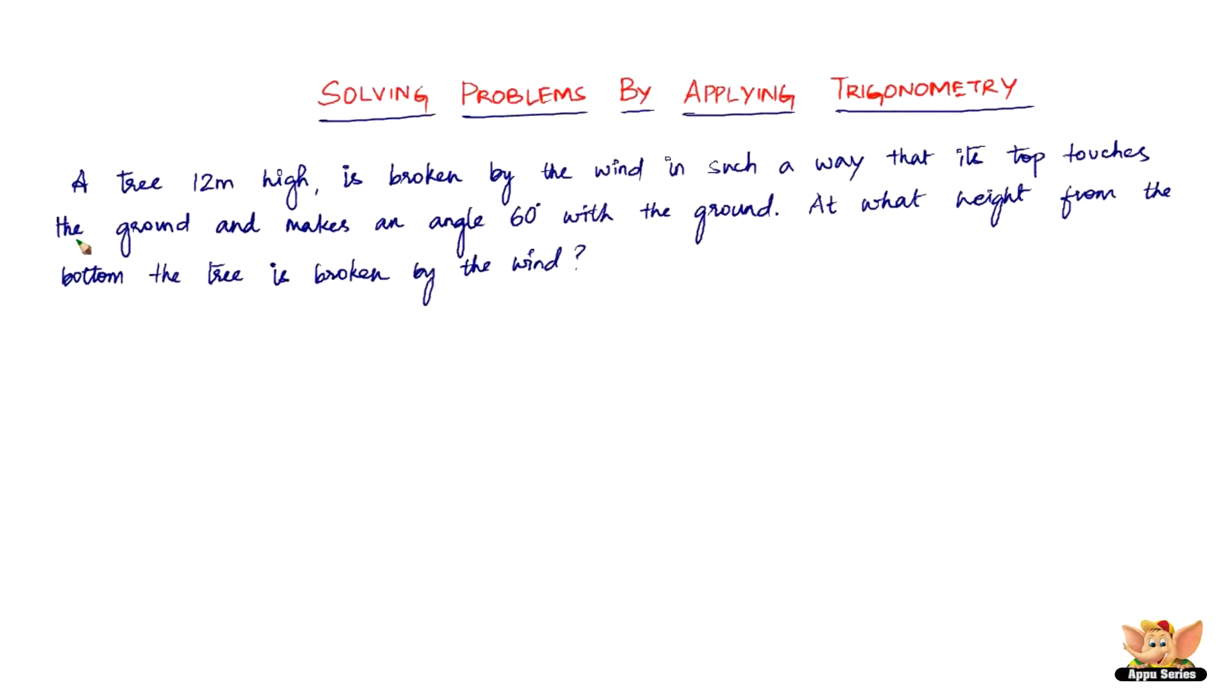In this video, let us solve problems by applying trigonometry. We've got a problem here which reads like this: A tree 12 meters high is broken by the wind in such a way that its top touches the ground and makes an angle 60 degrees with the ground.